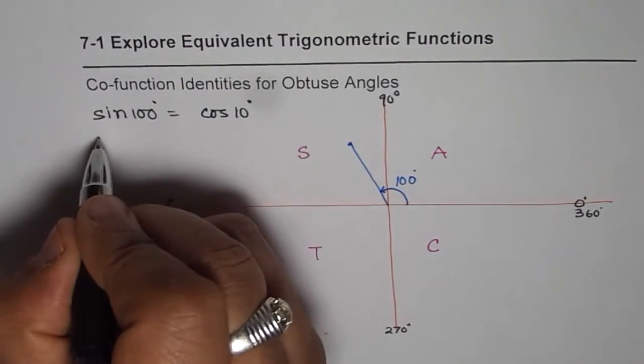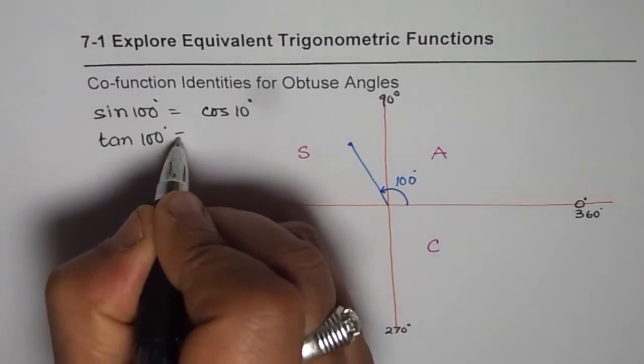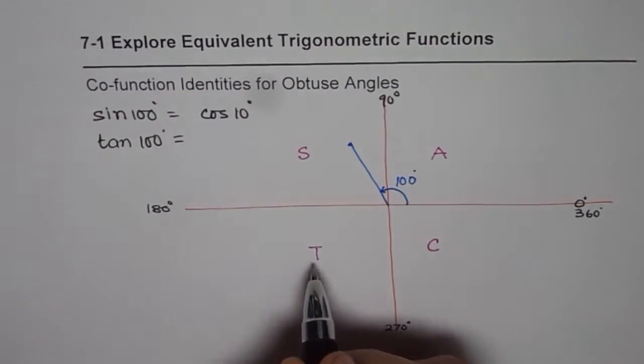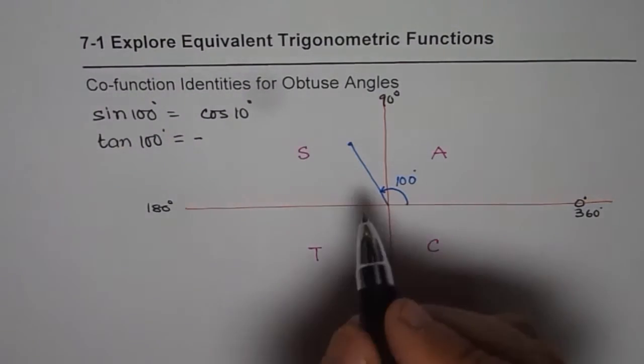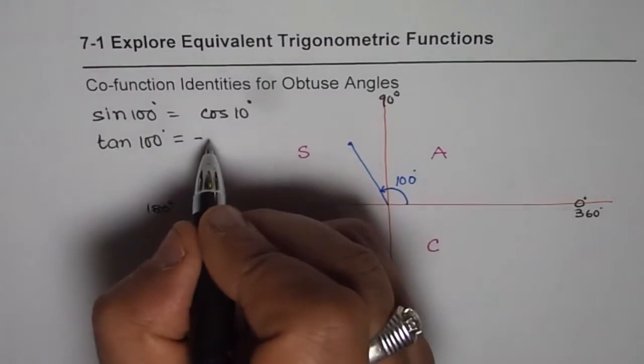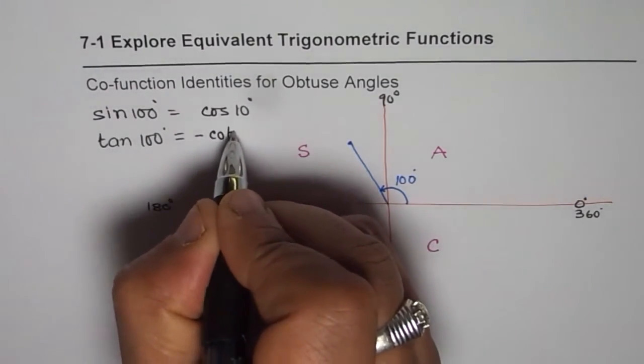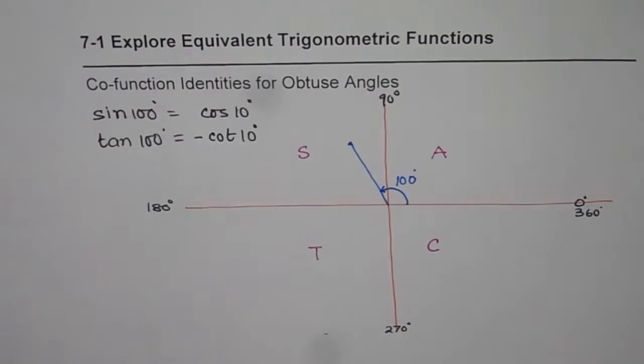But if I have tan of 100 degrees, in that case, tan is positive in quadrant 3, not in 2. So we are expecting a negative value. And the acute angle, 90 taken away from 100, gives me 10. And co-function is cot for tan. So we get negative cot of 10 degrees. Perfect.